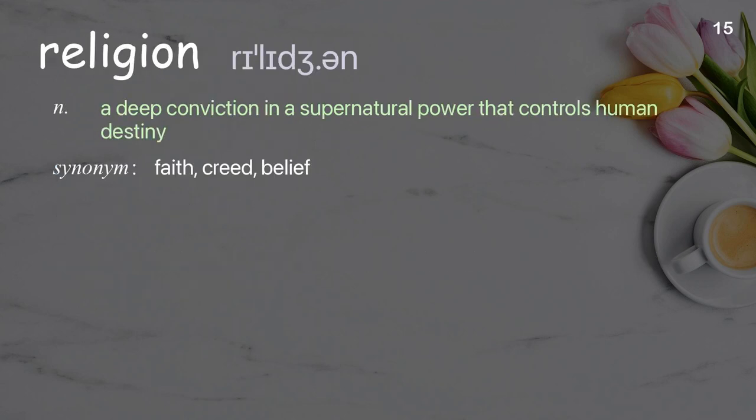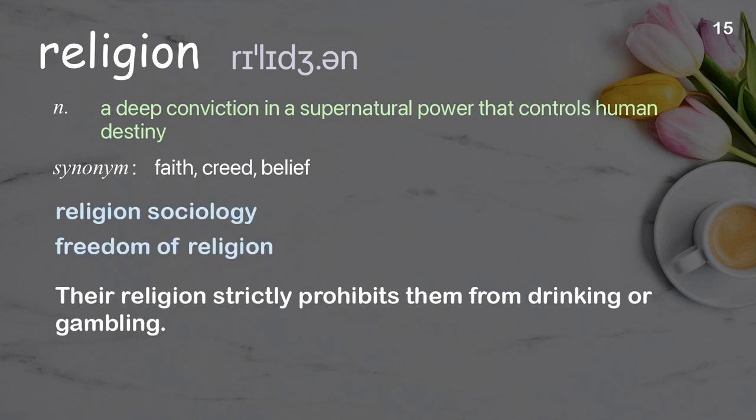Religion: a deep conviction in a supernatural power that controls human destiny. Examples: sociology, freedom of religion. Their religion strictly prohibits them from drinking or gambling.